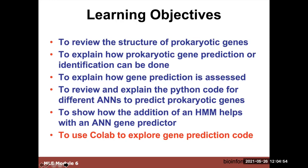This is a general concept that could also be applied to many other things — you just have to associate the relationships with your own problems. I'm going to talk about how gene prediction has been traditionally done, how it's assessed, and then we're going to look at some code with different ways of predicting prokaryotic genes, and then dive into using Colab to look at the gene prediction code.